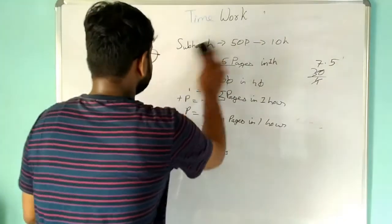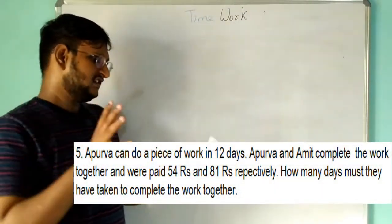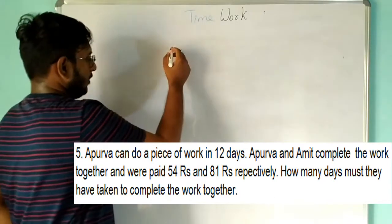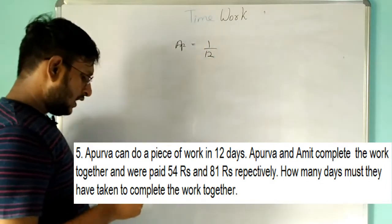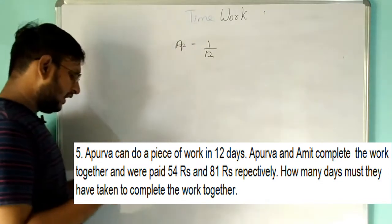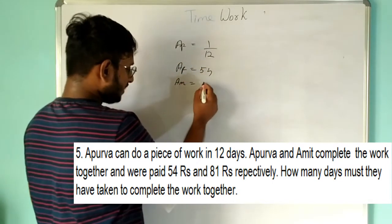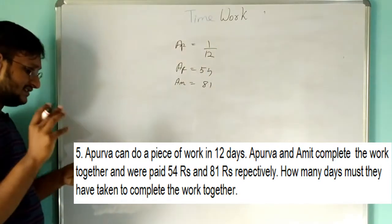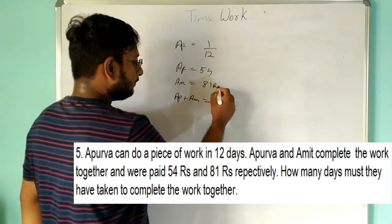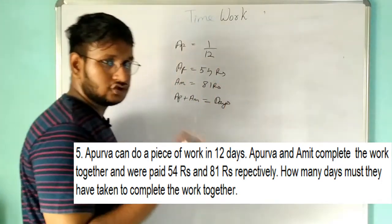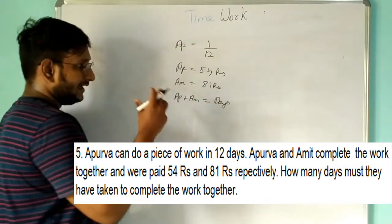Let's move on to the fifth and final problem — quite challenging. Apurva can do a piece of work in 12 days. So in one day she can do 1/12 of the work. Apurva and Amit completed the work together and were paid rupees 54 and 81 respectively. How many days must they have taken to complete the work together? The problem is we don't know Amit's capacity.